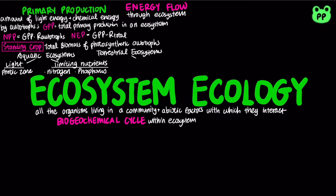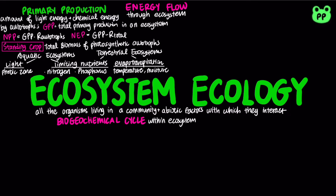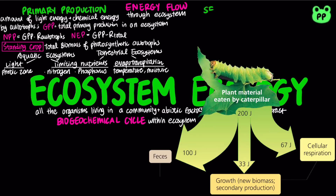Nitrogen and phosphorus are typically the nutrients that most often limit marine production. In terrestrial ecosystems, evapotranspiration plays a big role in primary production. Actual evapotranspiration is the water annually transpired by plants and evaporated from a landscape, which is dependent on temperature and moisture. On a local scale, soil nutrients are often the limiting factor in primary production.